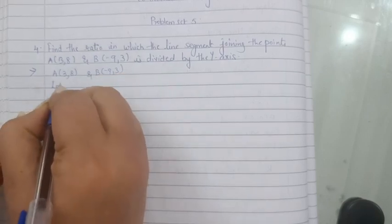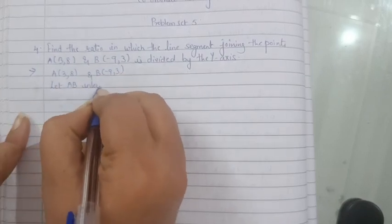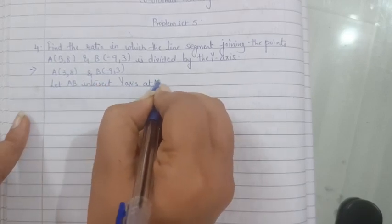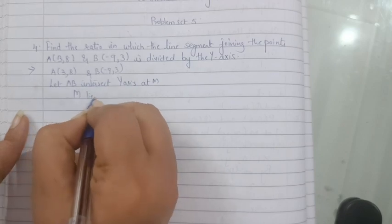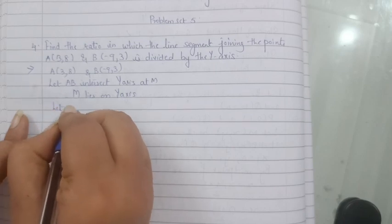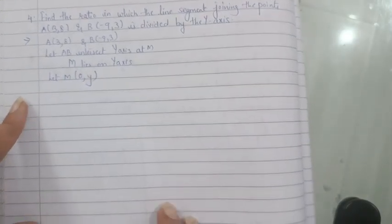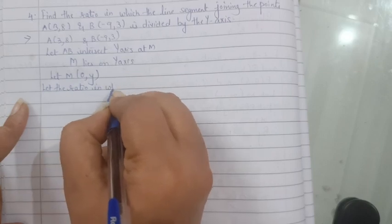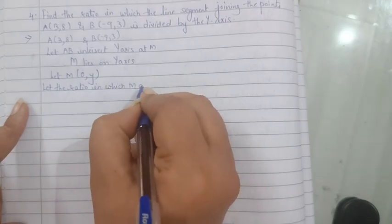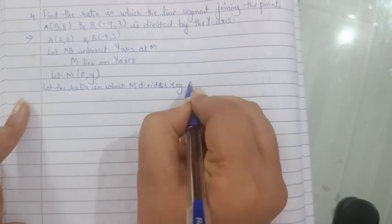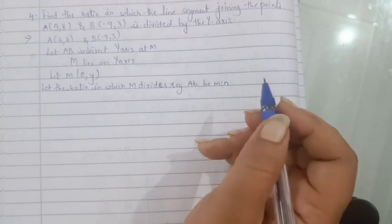Let AB intersect the y-axis at point M. So M lies on the y-axis. Let M be (0, y) — we know that we cannot write y as 0 here. Let the ratio in which M divides segment AB be m to n. Is this part clear?